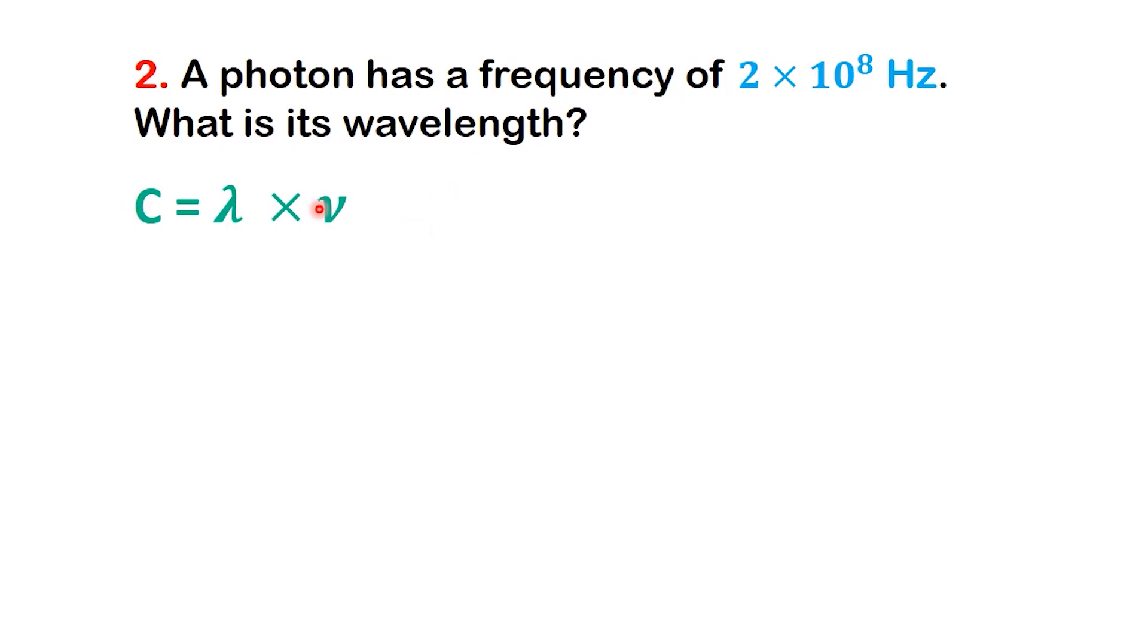Again, we'll use the same equation. C equals lambda times nu. This time, we rearrange it to solve for wavelength. lambda equals C divided by nu.